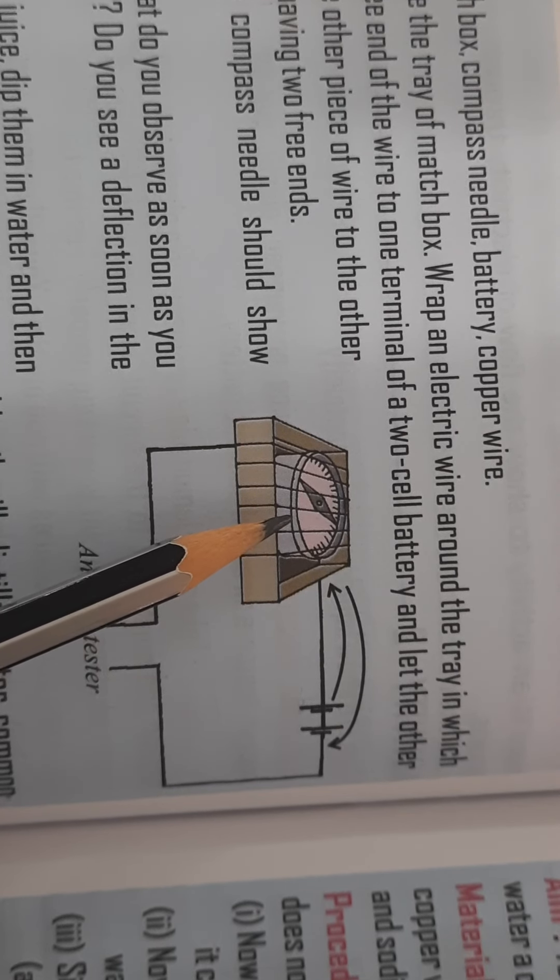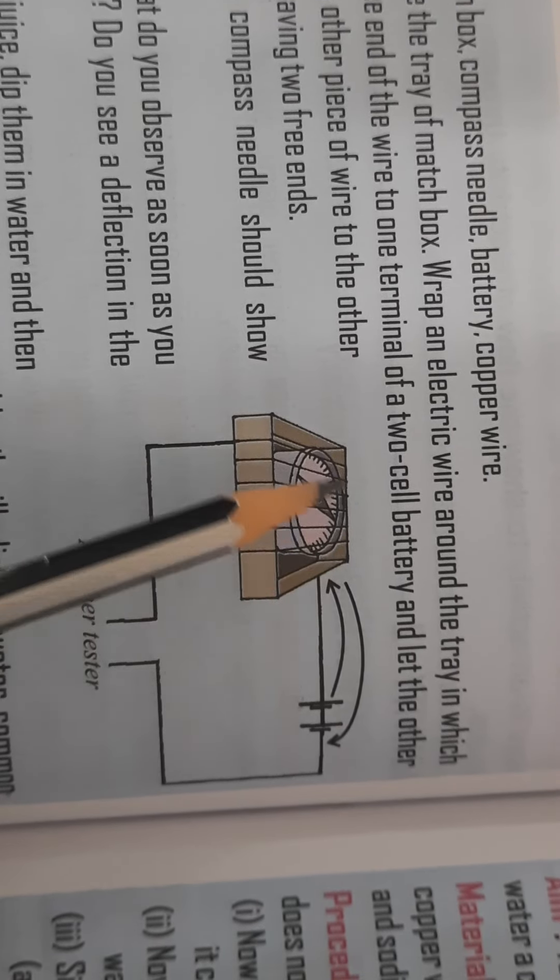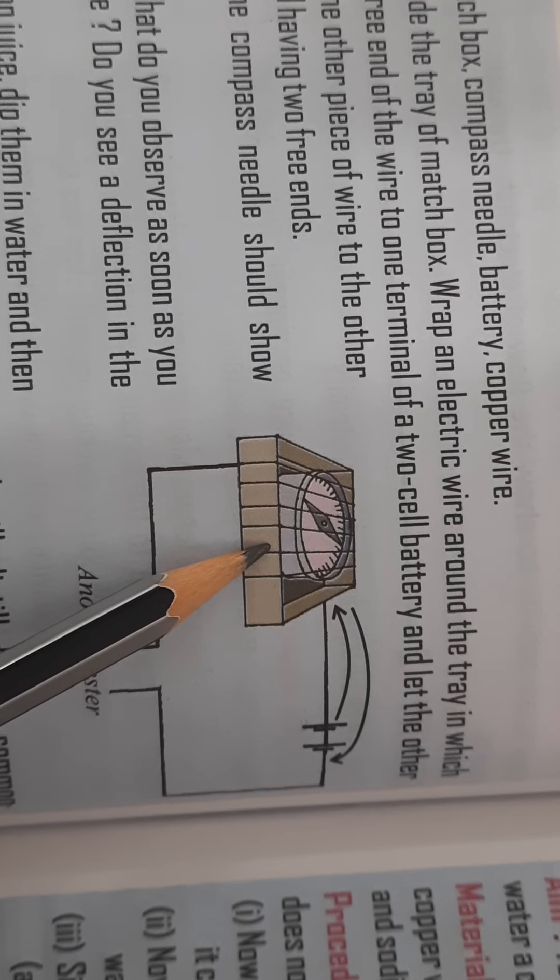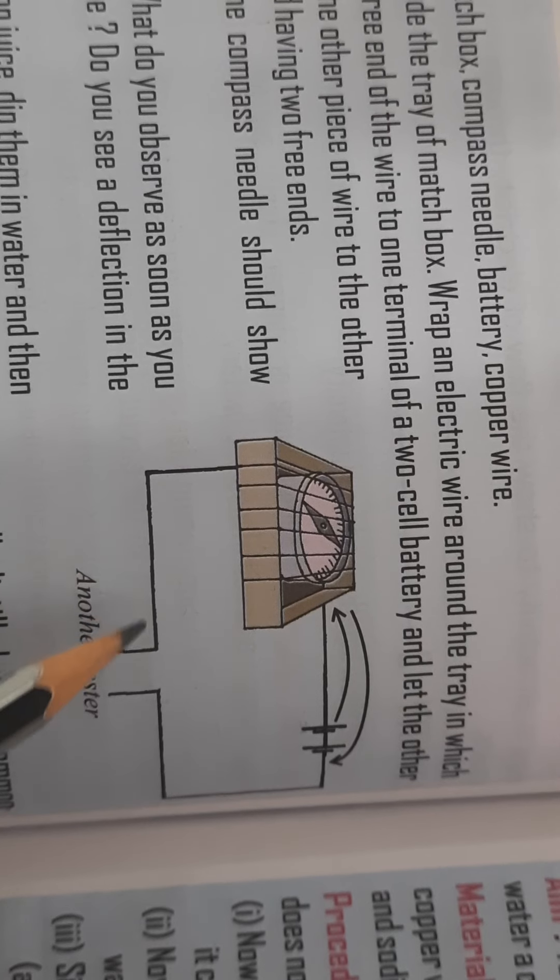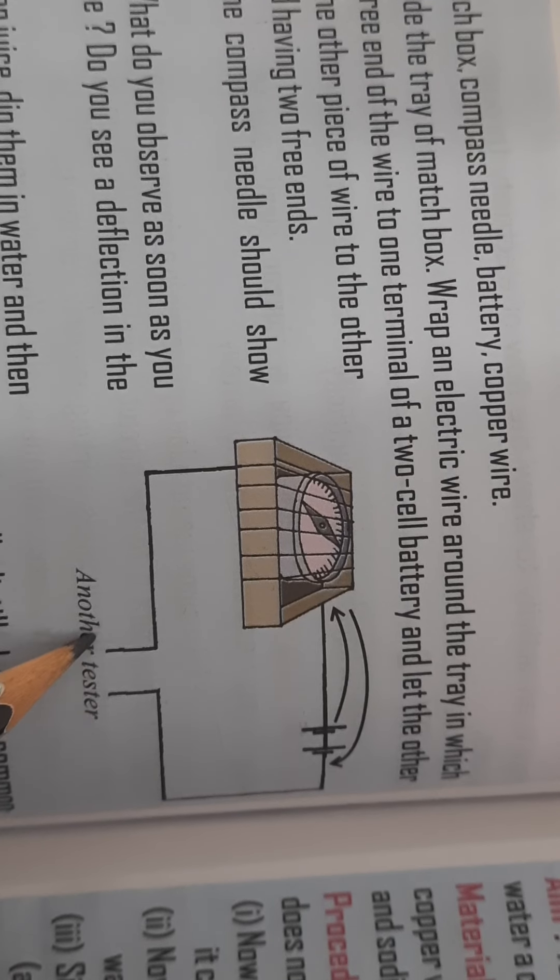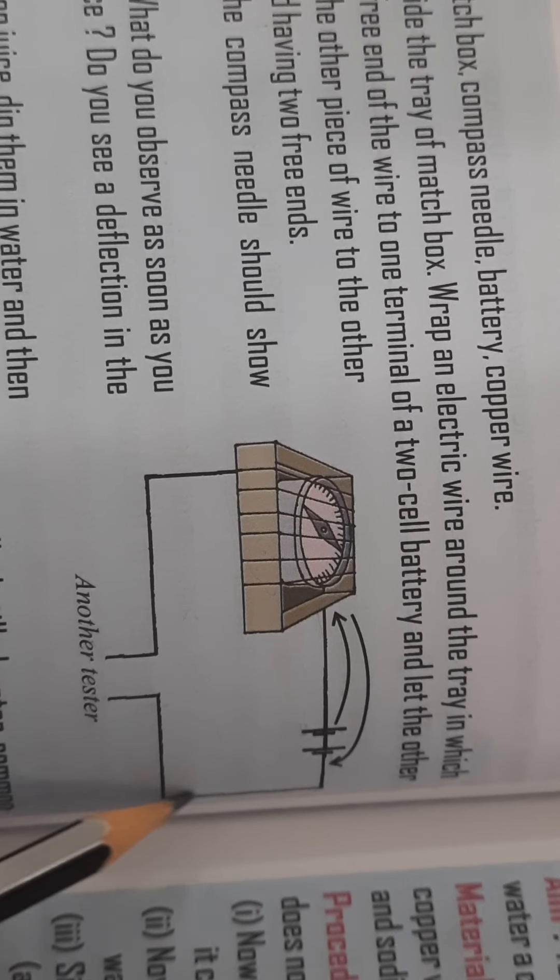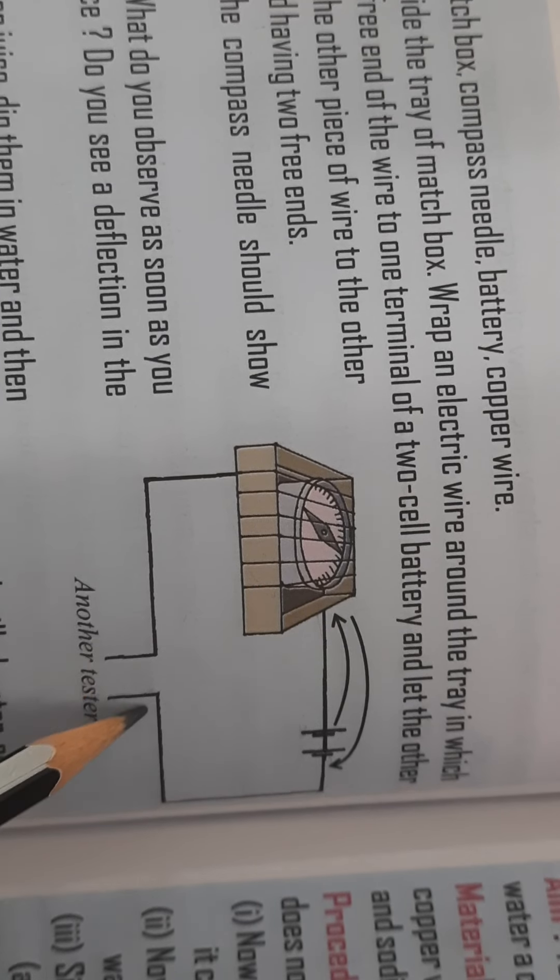You have put the compass needle in that matchbox. Then you have to wrap the wire around this matchbox. Then one end of the wire you have brought here. And the second end of the wire, which is passing through the batteries, you have put it here. That means you have to leave both the ends free.